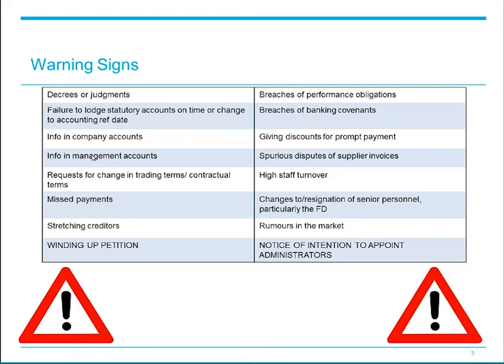Breaches of banking covenants — for example in reserve based lending the asset revaluation which is likely to occur on a six monthly basis may lead to covenant breaches. Making deals with customers for prompt payment in return for discount can be another factor. Disputing supplier invoices with no basis to the dispute is another way of buying time, stretching creditors. A high staff turnover can be an indicating factor and changes to senior personnel or resignations, and in particular the CFO, can sometimes be indicative of financial distress. And rumours in the market of course. By the time you get to the warning signs at the bottom of the slide — a winding up petition or lodging of a notice of intention to appoint administrators — the position is likely to be critical.